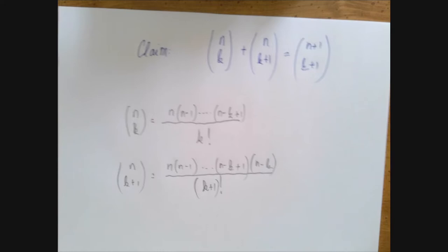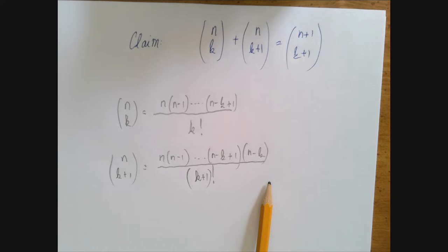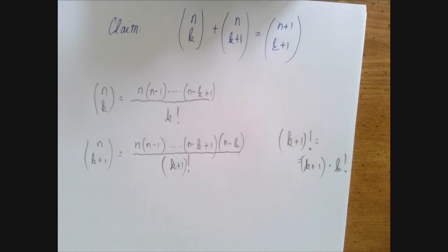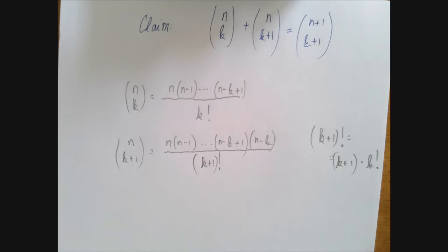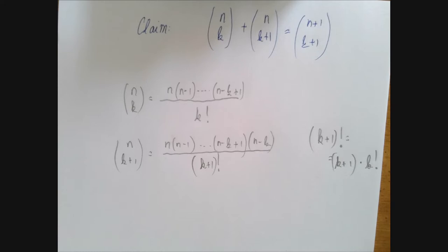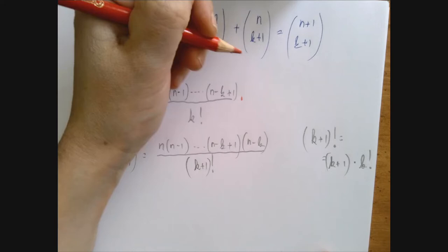N choose k and n choose k plus 1 are quite similar. In the second expression both the numerator and the denominator has an extra piece. There is an n minus k here. All the others are common to the two. There's going to be a huge common factor and also k plus 1 factorial equals k plus 1 times k factorial. So what we're going to do is add these two, but first we're going to bring them to the common denominator. We get the common denominator if we just multiply this one by k plus 1 over k plus 1.